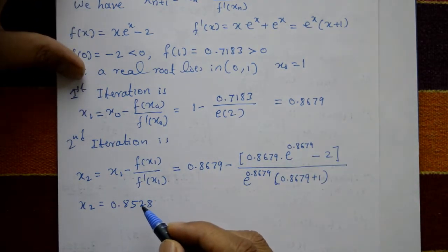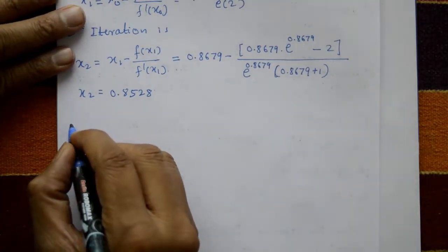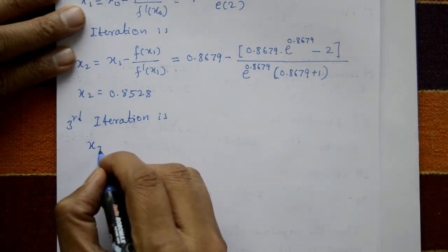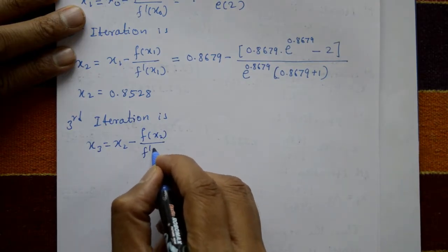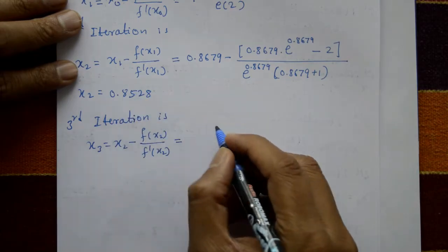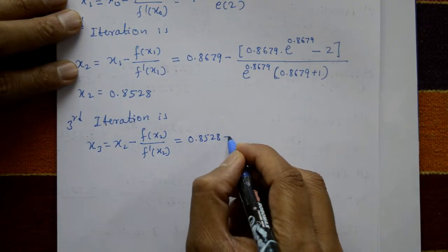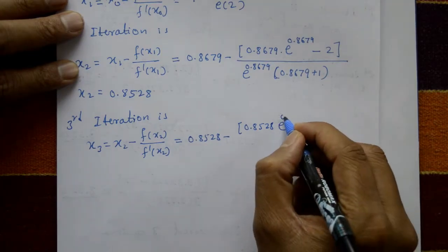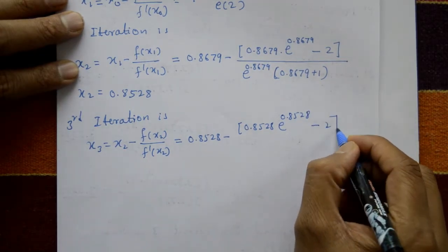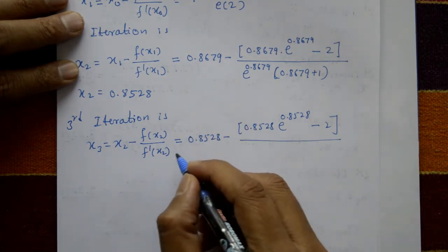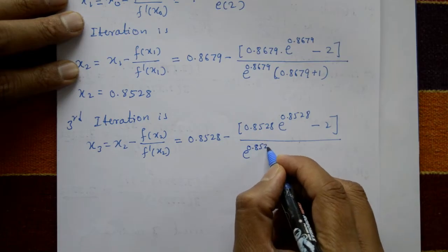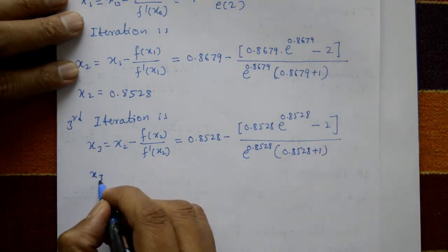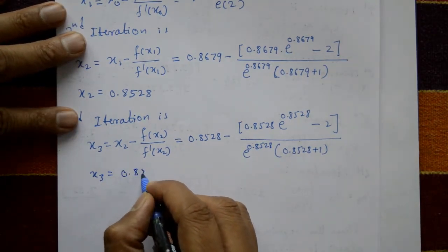Third iteration: x₃ = x₂ minus f(x₂) / f'(x₂). Taking x₂ = 0.8528: numerator is 0.8528·e^0.8528 minus 2, denominator is e^0.8528·(0.8528 + 1). This gives x₃ = 0.8526.